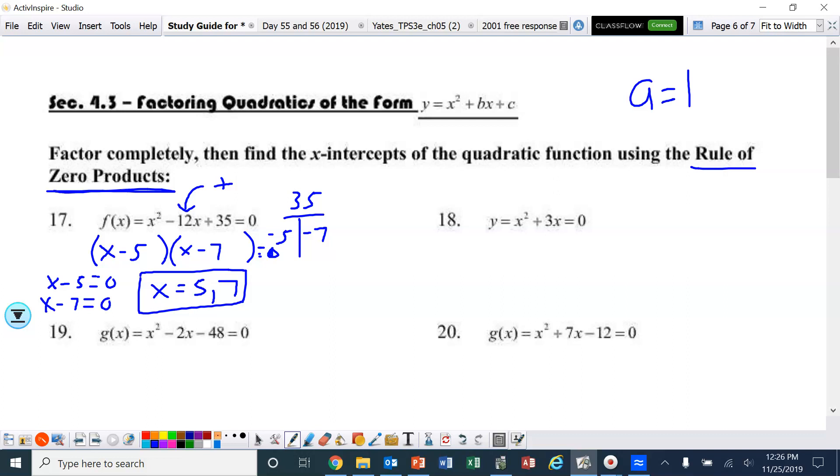The next one, put a little star by this one, ladies and gentlemen. This one is often missed on the test. On this one, the c value is missing. So when that happens, we're just going to pull out the GCF. When we do that, it will be factored. So the GCF here is x. What's left? x plus 3 is on the inside, and it equals 0.